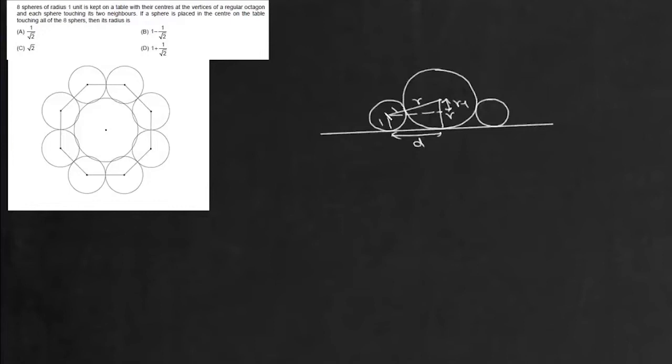So in this triangle—say C1, C2, and A—if this angle is 90°, then we can write C1C2² equals AC1² plus AC2². Now C1C2 is 1 plus R.